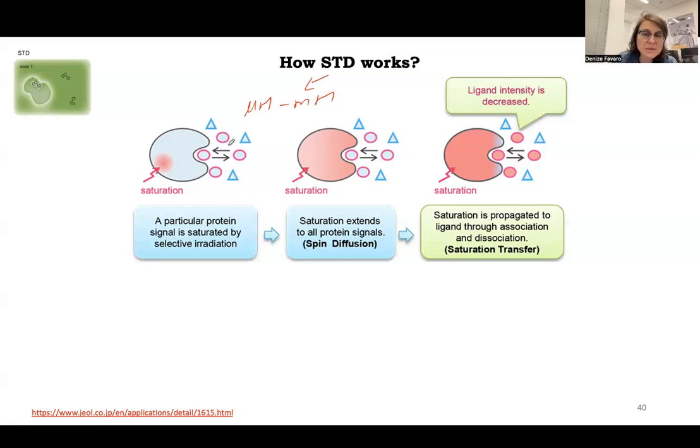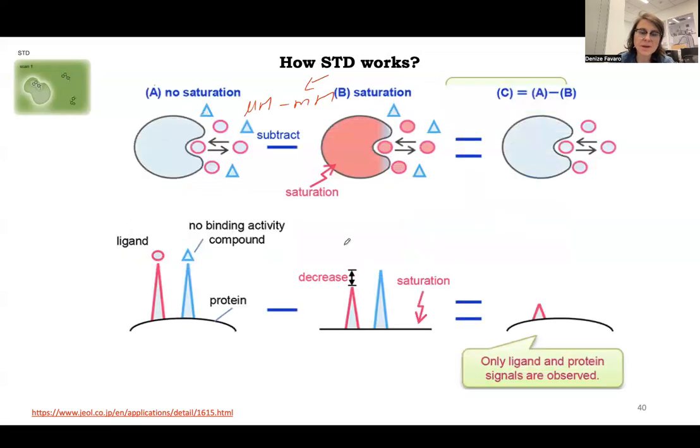This is schematically how the experiment works. You saturate the protein, being careful not to saturate any of the ligand's signal. Once the protein is saturated, it's going to transfer the saturation to the ligands that bind and unbind the protein. So you're going to observe an effect on the free ligand. For example, this is a representation when the circles bind and the triangles don't bind the protein.